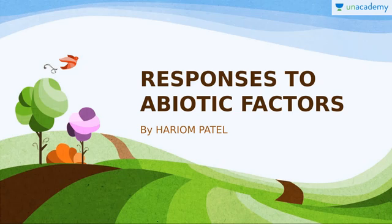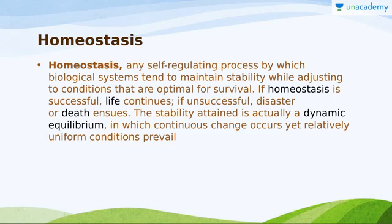There is something called homeostasis which the organism has to maintain. Homeostasis is any self-regulating process by which biological systems tend to maintain stability while adjusting to conditions that are optimal for survival. Homeostasis involves maintenance of basal metabolic rate, normal blood pressure, normal body temperature, and normal glucose level.